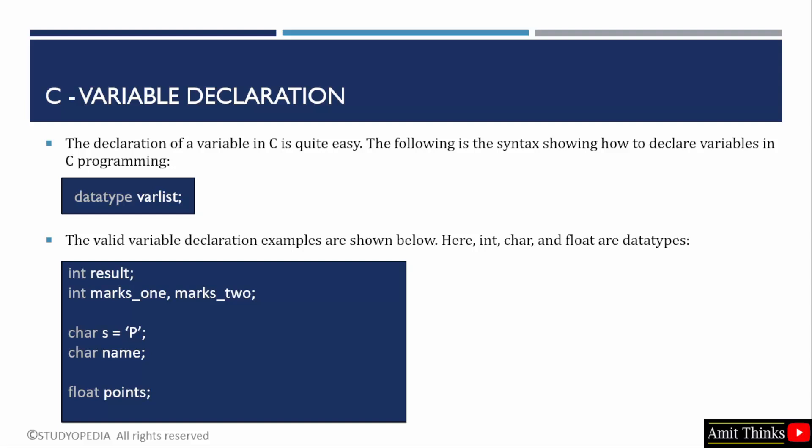Then came char, that means adding a single character. Let's say you have assigned a code regarding a task, you can mention it like this: char s = 'p'. Let's say the code name is 'p'. It's a single character, not a string. That's why we have included the char data type here. Then came your points. Let's say you want to mention the point like 1.50, 2.70, 3.75. You can add it under the float data type. That means float is the data type and points is the variable name.